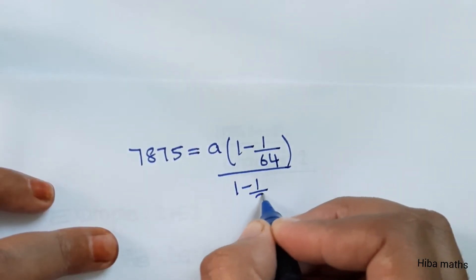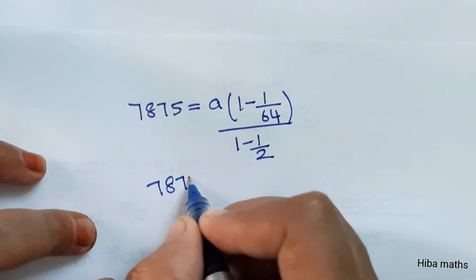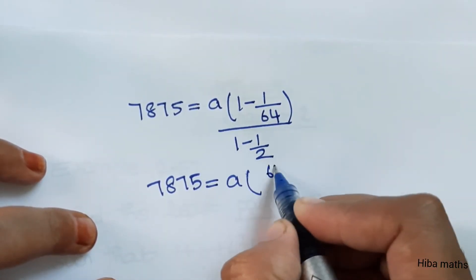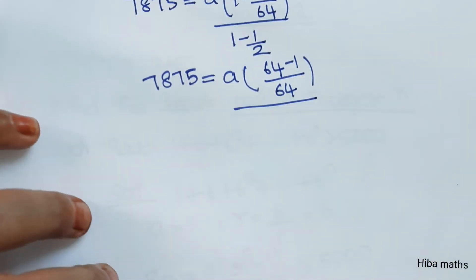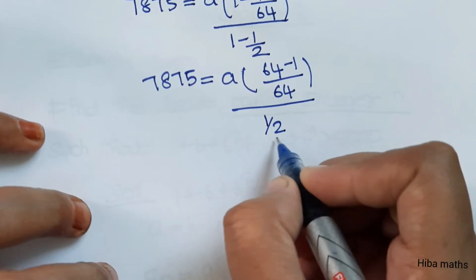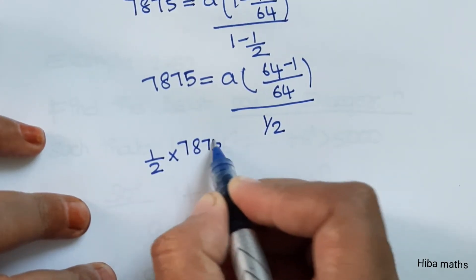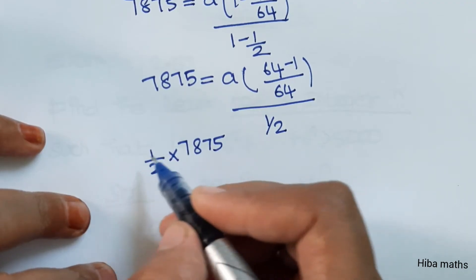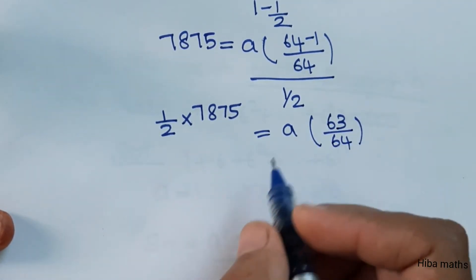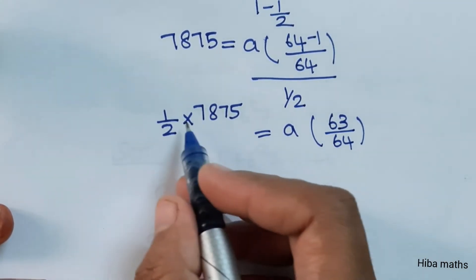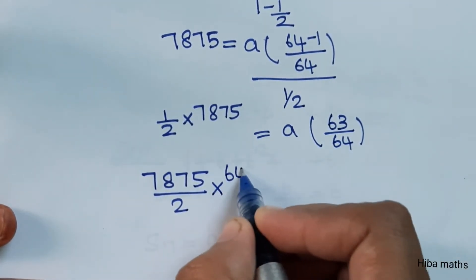So 7,875 equals a × (1 - 1/64) divided by (1 - 1/2). Working through: 1 - 1/64 = 63/64, and 1 - 1/2 = 1/2. Therefore 7,875 = a × (63/64) ÷ (1/2), which simplifies to a × 63/32.